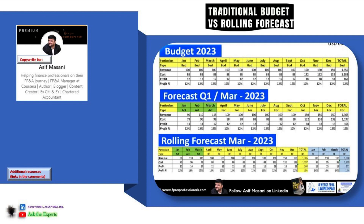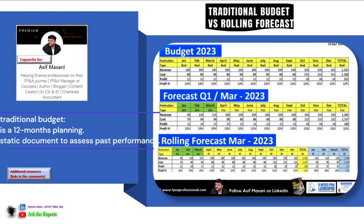As you can see, the traditional budget is a 12-month planning with updating taking into consideration the actual figures. So it could be considered as a static document to assess past performance.